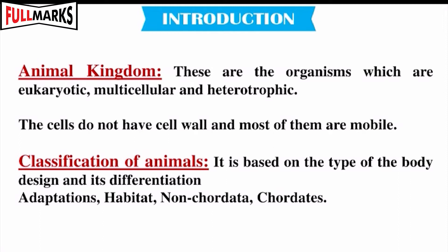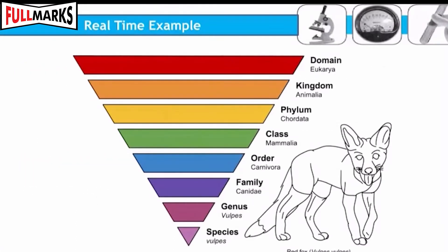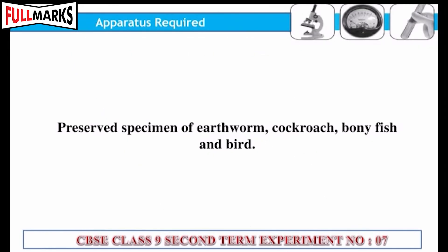Adaptations, habitat, non-chordata, chordata. This experiment helps us to study about the specific features, adaptive features, and the habitat of the given specimens like earthworm, cockroach, bony fish, and bird.